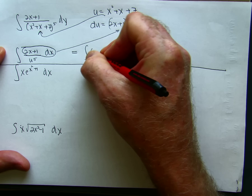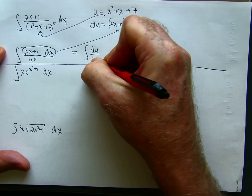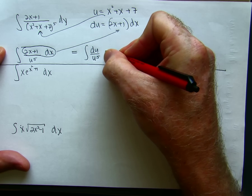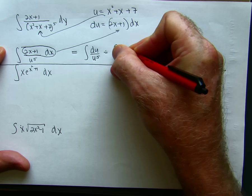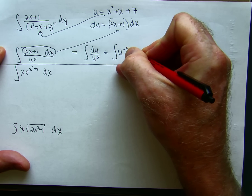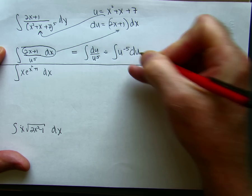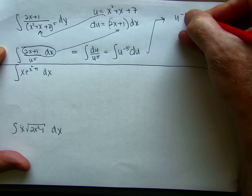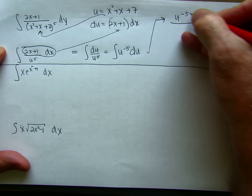So I get du over u to the 5th. Remember that you want to write your exponents on the top rather than in the denominator. And now it's just a simple integration. I get u to the minus 5 plus 1, which is minus 4.